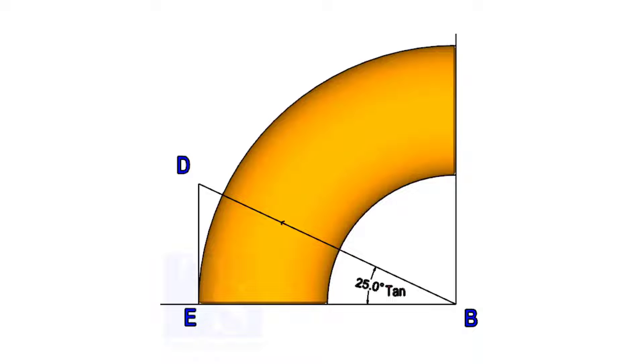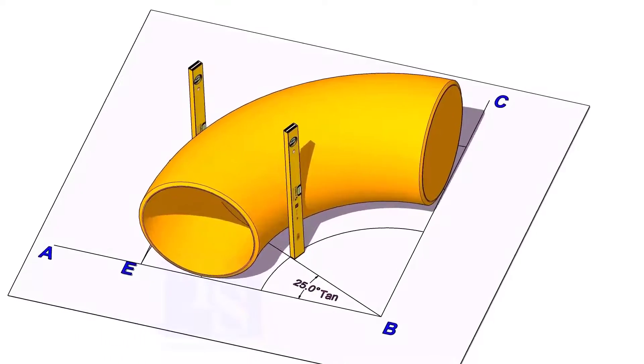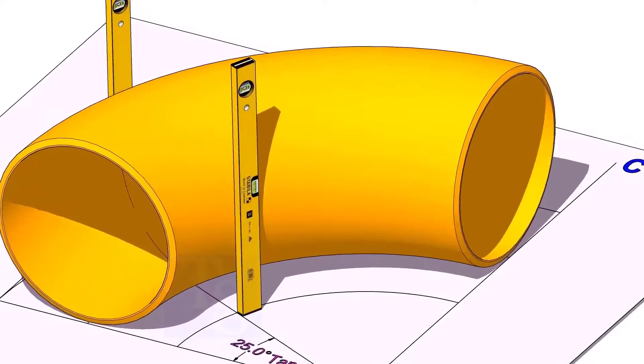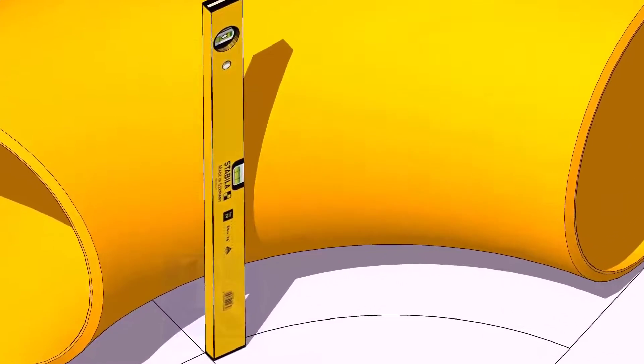Now, put the elbow exactly on the layout as shown. Hold two large level bottles at the edge of the elbow on both sides vertically and strike a mark where the level bottle edge touches the elbow.